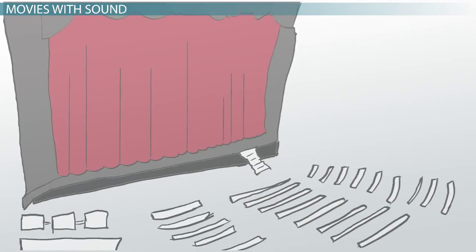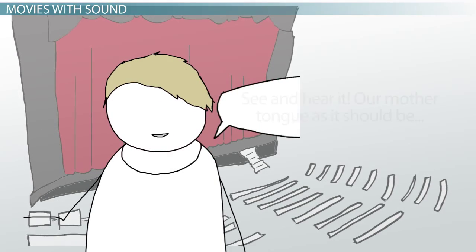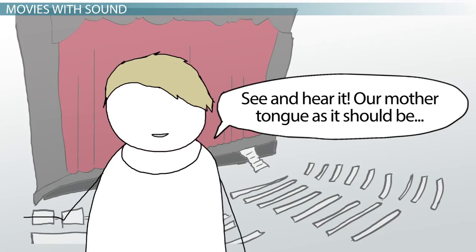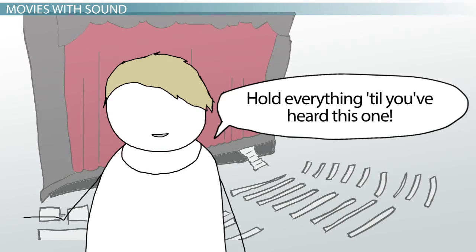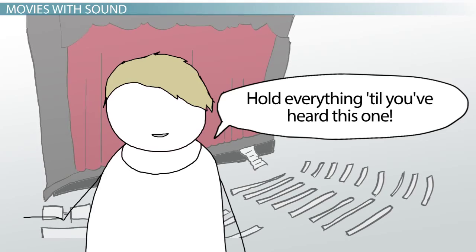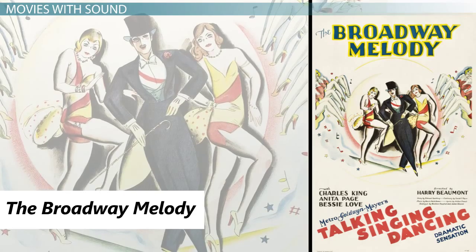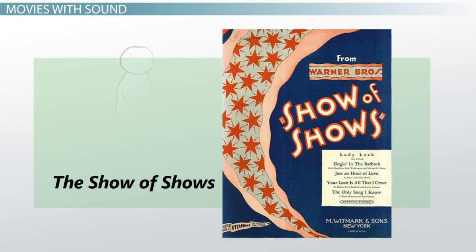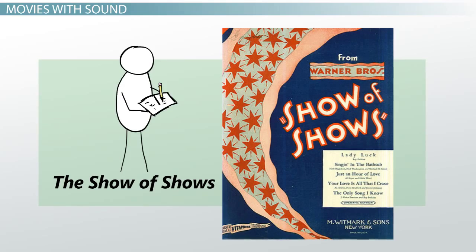'See and Hear It, Our Mother Tongue as it should be, Spoken, 100% talkie, 100% entertainment, Hold everything till you've heard this one.' The Broadway Melody, in 1929, the first feature-length musical on film. And Warner Bros. The Show of Shows, 1929, which was billed as All-Talking, All-Singing, and All-Dancing.